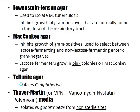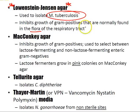Lowenstein-Jensen agar is used to isolate Mycobacterium tuberculosis — it inhibits gram-positive flora of the respiratory tract. MacConkey's agar inhibits gram-positives and selects between lactose-fermenting and non-lactose-fermenting enteric gram-negatives. Lactose fermenters on MacConkey's agar grow in pink colonies. Tellurite agar isolates Corynebacterium diphtheriae — its colonies have a black color due to metabolism of tellurite to tellurium.